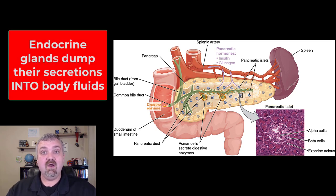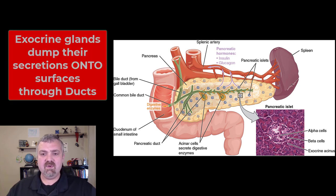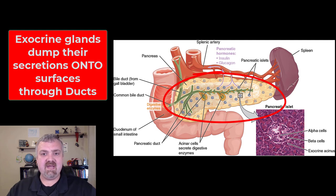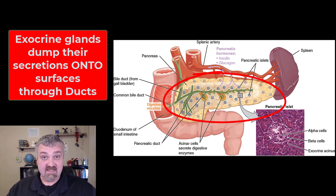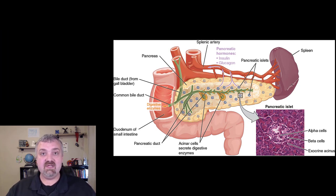Endocrine glands are going to dump chemical messengers into your body fluids — think about blood primarily. So endocrine glands dump secretions into your blood, "into" being the key word. Exocrine glands, the other 99% of the pancreas, are going to be making digestive enzymes and buffers, dumping their secretions onto surfaces. Endocrine glands dump secretions into your body; exocrine glands dump secretions onto surfaces.